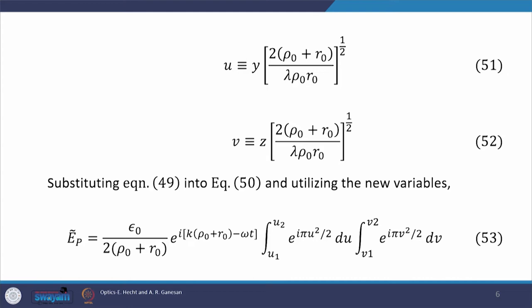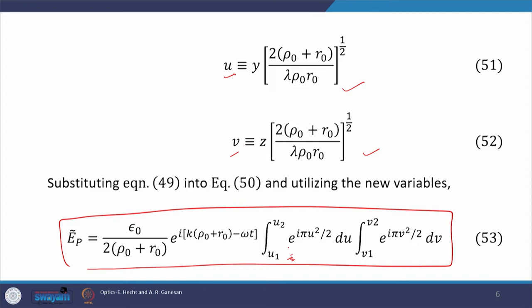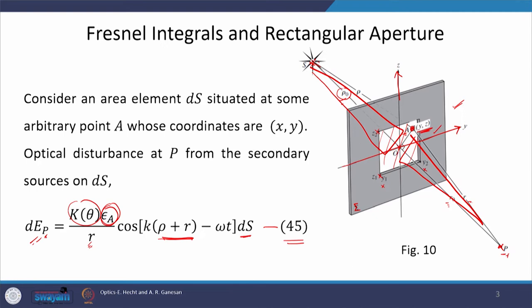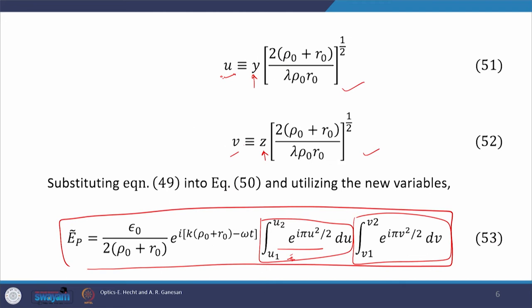To calculate the field due to the whole aperture, we perform a double integration — one along y and one along z — with rho plus r replaced by equation 49. We then introduce two new variables u and v defined by equations 51 and 52. After substituting back into equation 50, we get a large expression where u-dependent terms appear in one integral and v-dependent terms in the other. Here u relates to y (horizontal) and v relates to z (vertical).